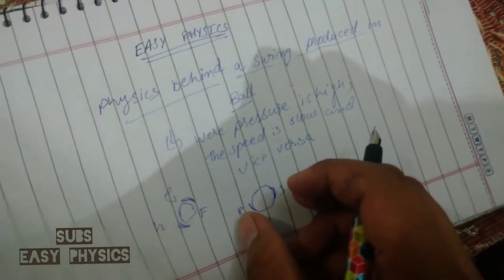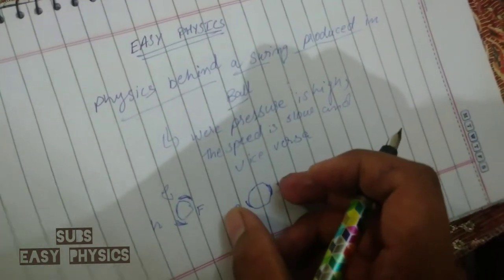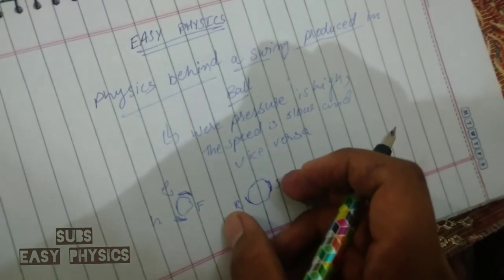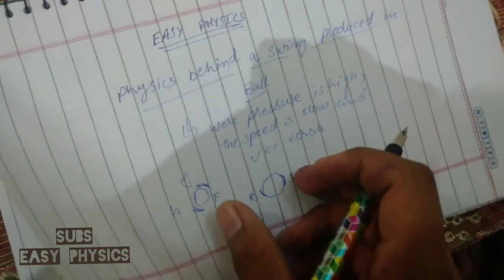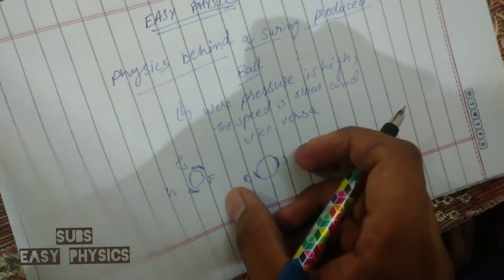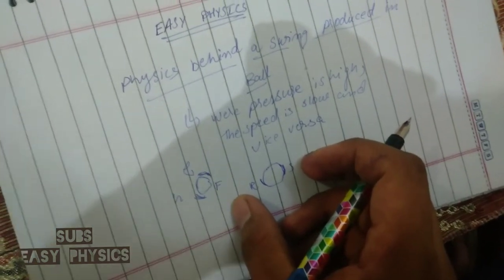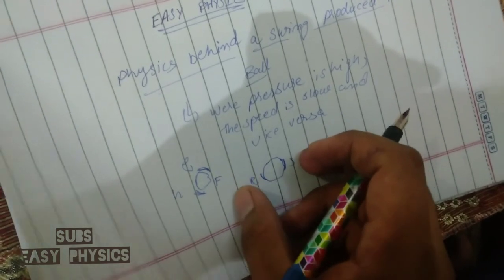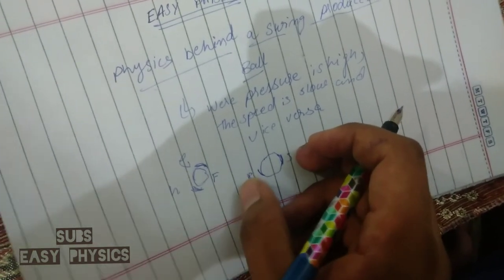A swing will be produced in the ball when there is a difference in the speed of the air on both sides of the ball. If the speed of the air on the rough side of the ball is higher while the speed of the air on the shine surface of the ball is low, then the pressure on the rough surface of the ball will be low.